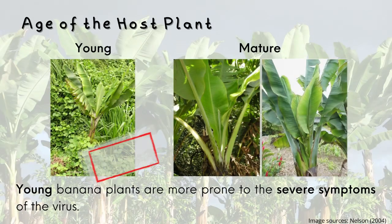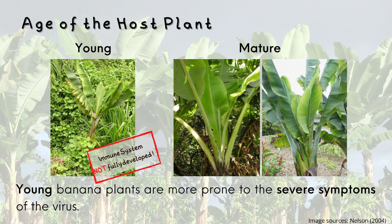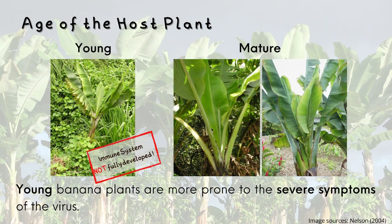Age of host plant. Bananas can be infected by BBTV at any stage of growth. However, according to literature, young banana seedlings are much more prone to have severe symptoms than older ones. This may be due to the fact that younger plants have not fully developed their innate immune system, meaning their cells still do not possess enough special receptor proteins to recognize pathogens and fight them off. For older plants, they often only develop mild symptoms in the form of a few dark streaks on the tips of the flower brackets, and the banana can still produce a relatively viable fruit, although it may appear distorted or twisted.